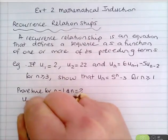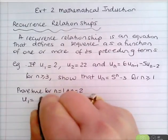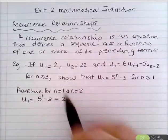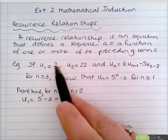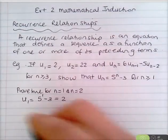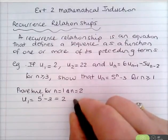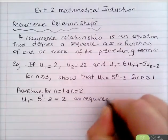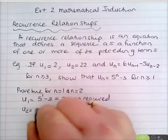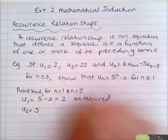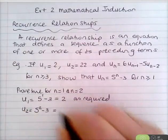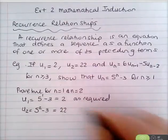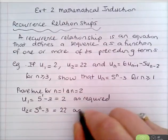u₁ = 5¹ − 3 = 2, which we know equals u₁, as required. u₂ = 5² − 3 = 25 − 3 = 22, again as required.